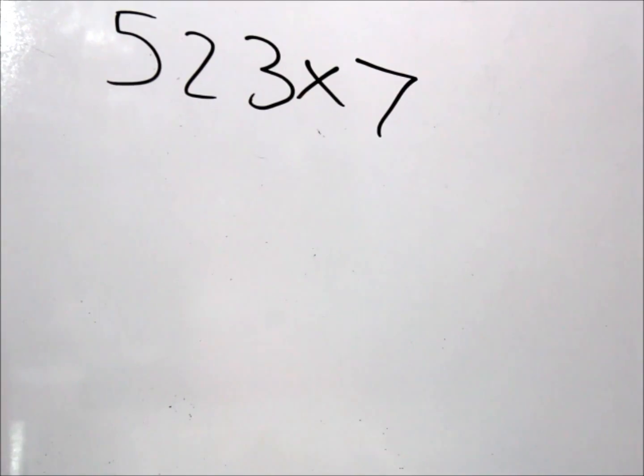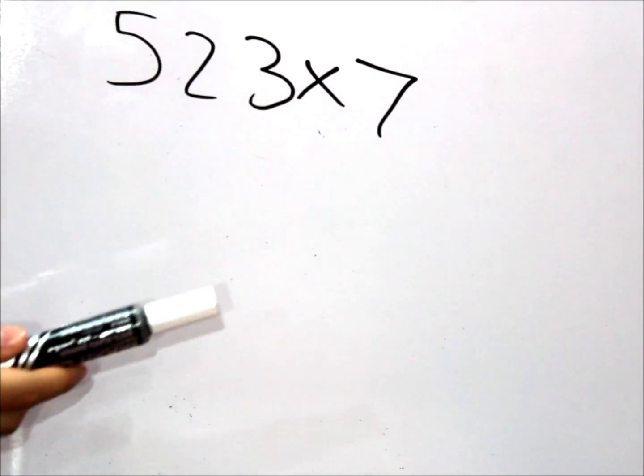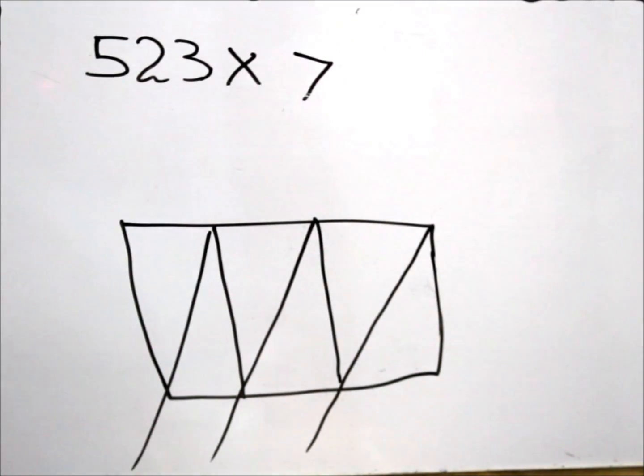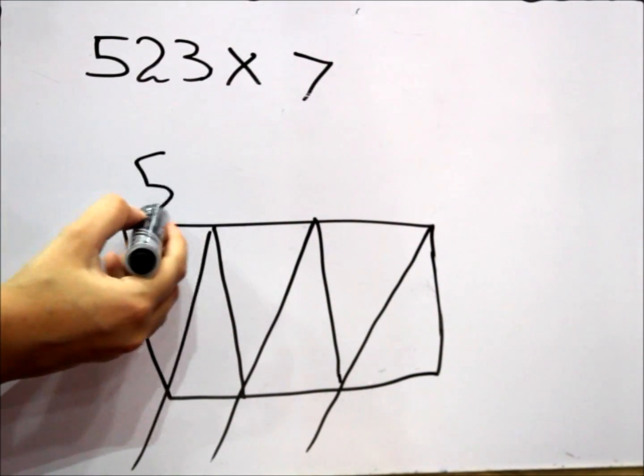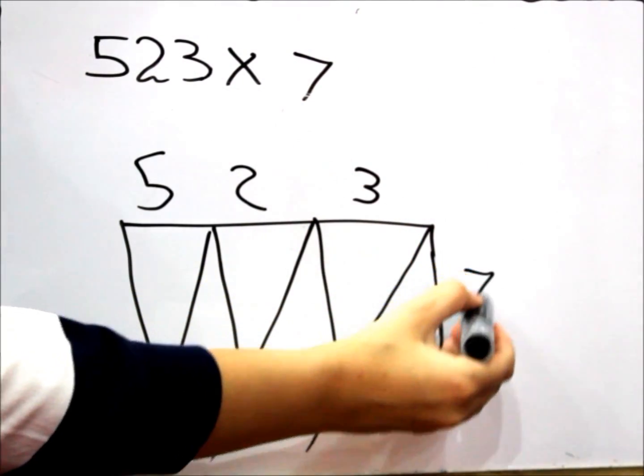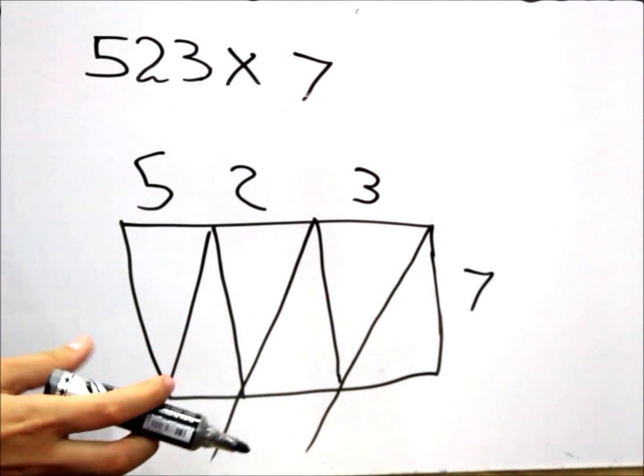Now we're going to draw a table made of three columns because this number has three digits, and only one row because this number is made of one digit. After we drew the table, we drew three diagonal lines. Now all that we have to do is place the five over here, the two over here, and the three over here, and the seven by the side. We're going to take each square and multiply the numbers.